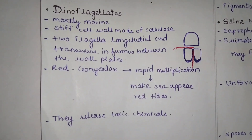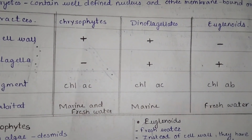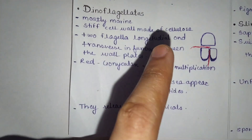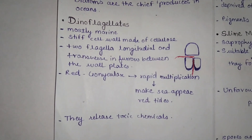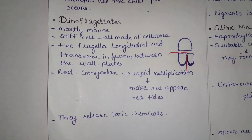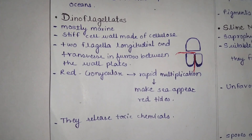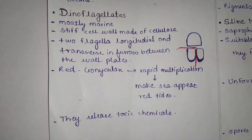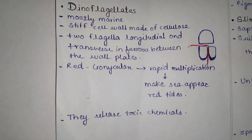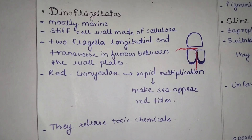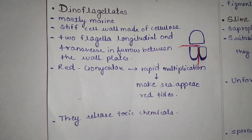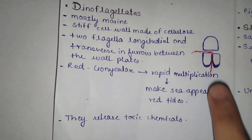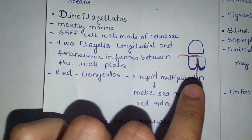Now we start with Dinoflagellates. Dinoflagellates are mostly marine. They have a stiff cell wall made up of cellulose. Here is a figure of Dinoflagellates to help you understand the structure.